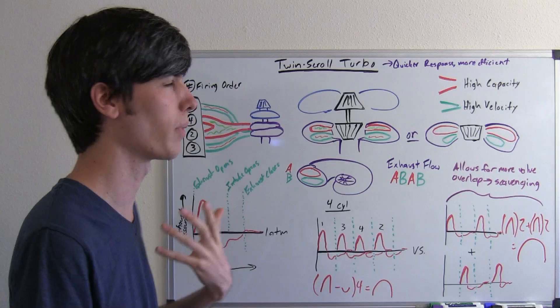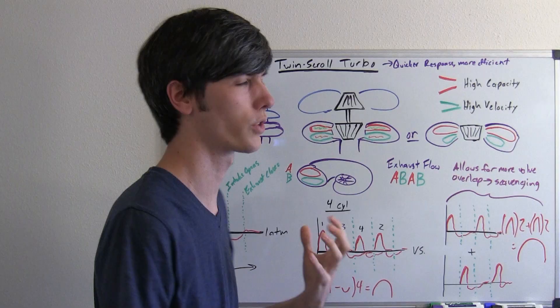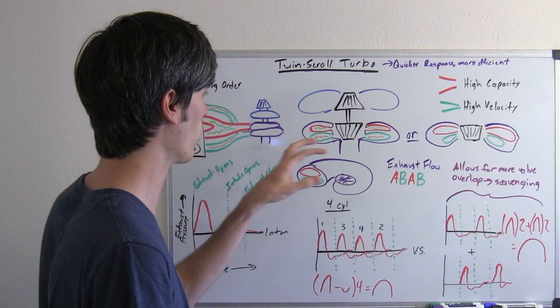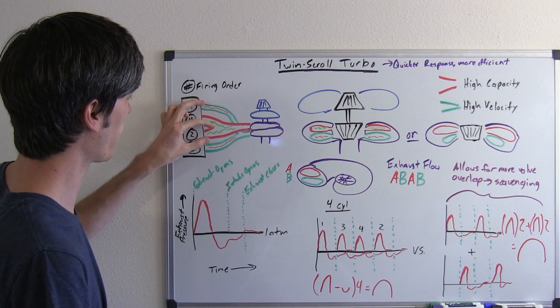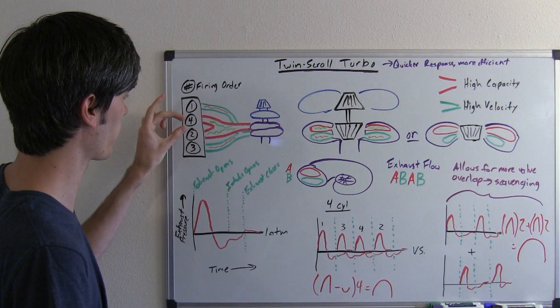So basically a twin scroll turbocharger, what you're doing is dividing up the exhaust manifold which exhaust ports go to the two different scrolls of this turbocharger. So what it looks like is, here's our engine and here's our exhaust manifold. And you can see that it's split between the top and bottom cylinders and then the middle two cylinders.